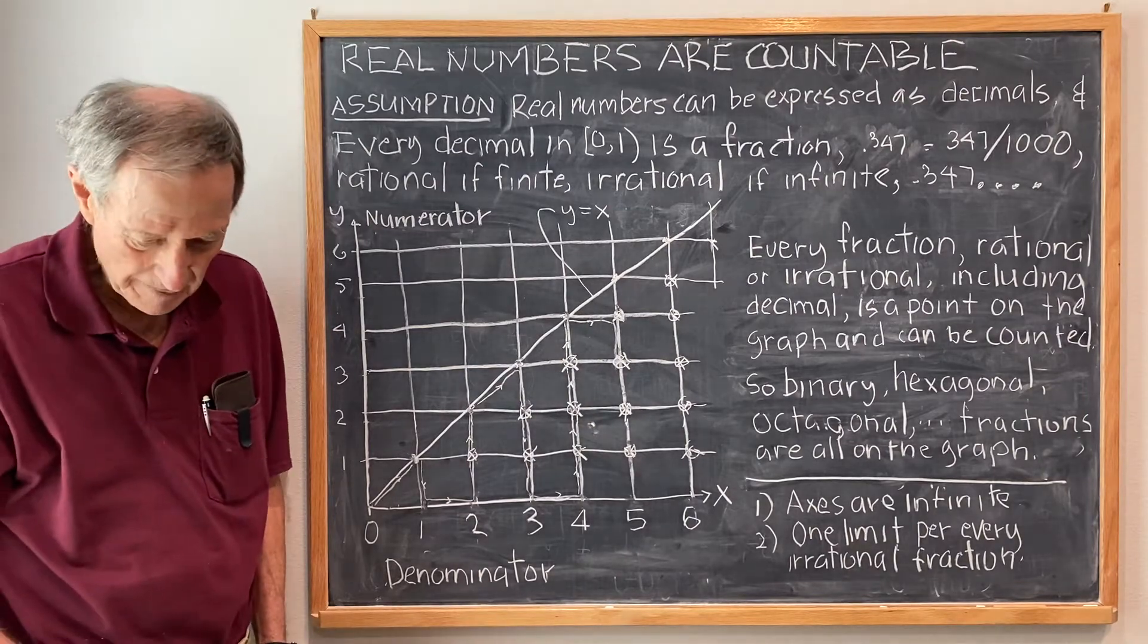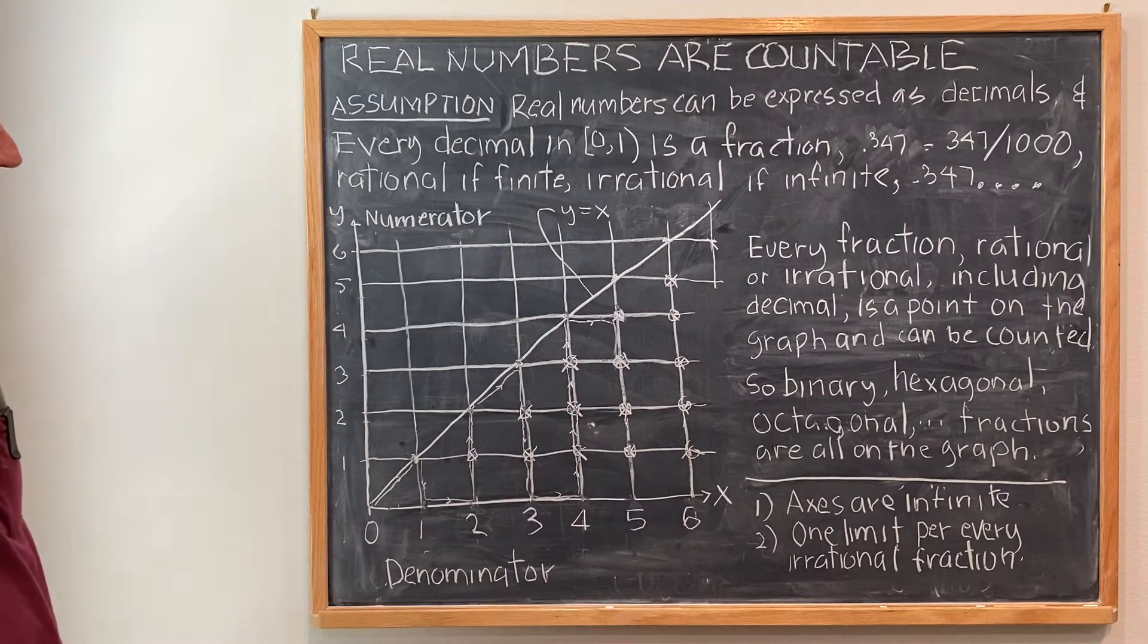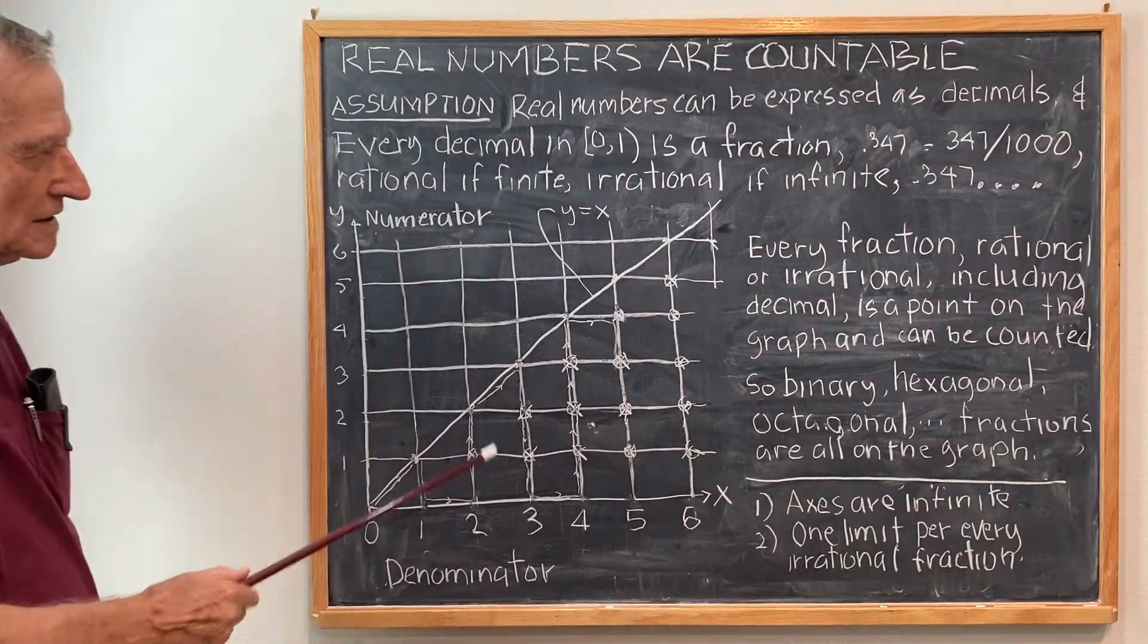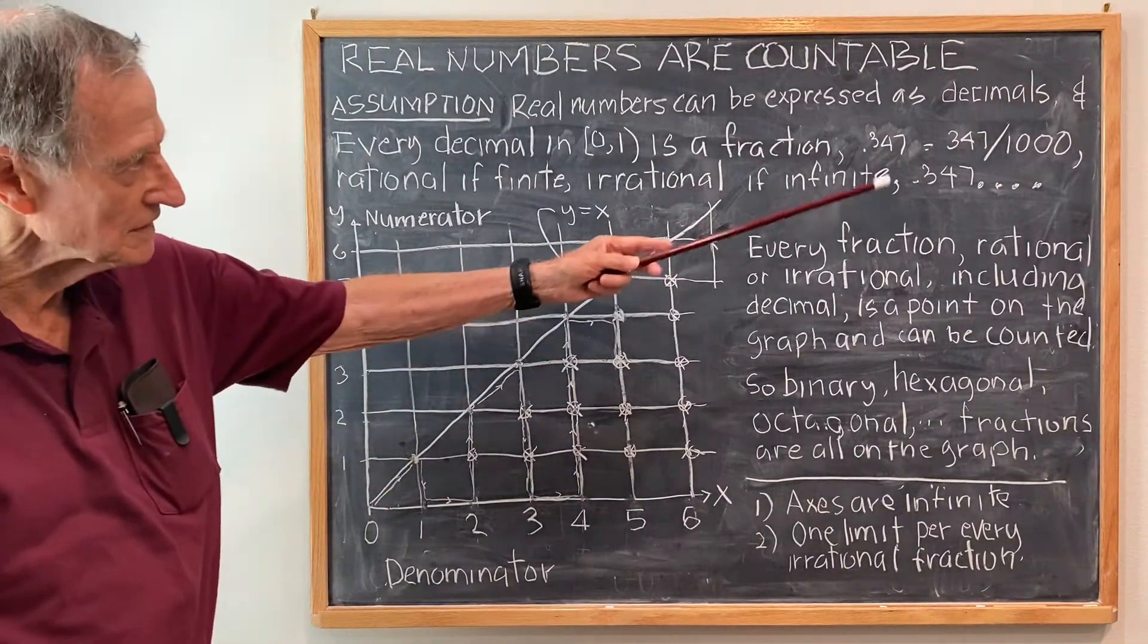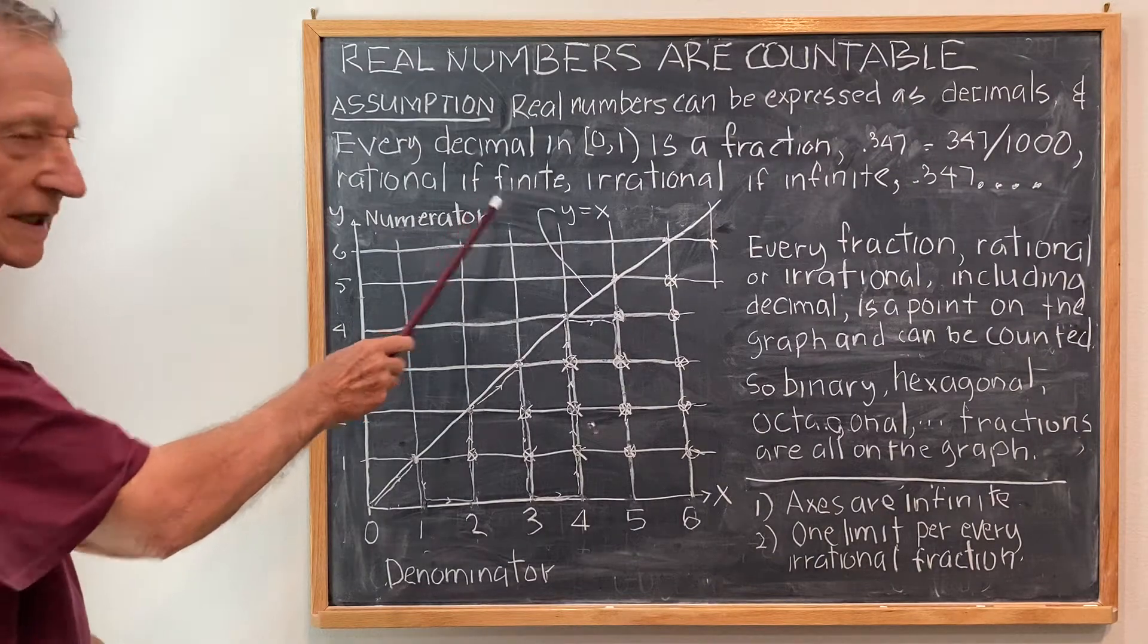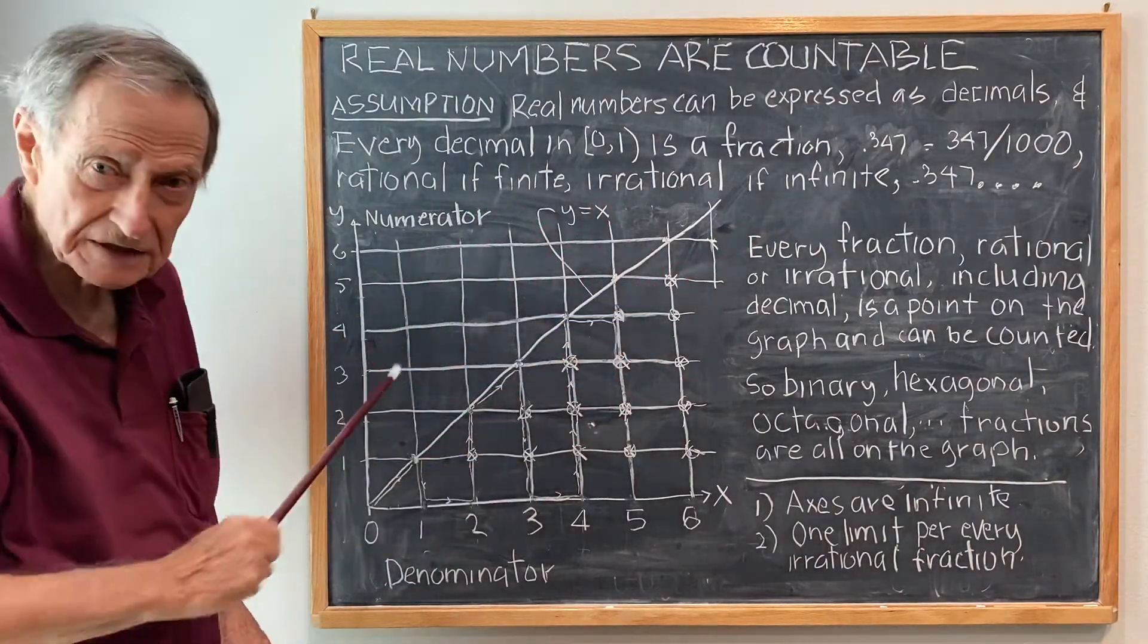Now, the assumption I'm making is that real numbers can be expressed as decimals and every decimal in the interval 0 to 1 is a fraction. For example, 0.347 is 347 over 1,000 and it's rational if it's finite and irrational if infinite by definition here.